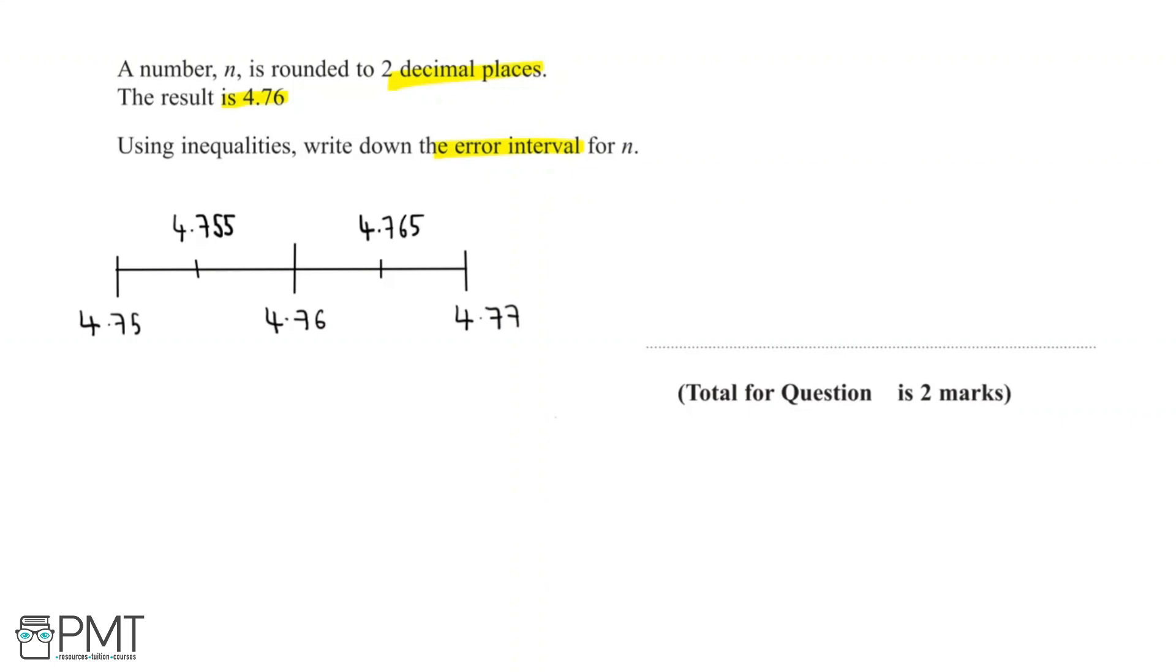And so we need to find out the range of values that could have been rounded to give a result of 4.76. So looking at 4.755, if we round that to two decimal places, we'll get 4.76. But if we go any number less than that, let's say for example 4.753, that will round down to 4.75.